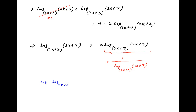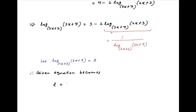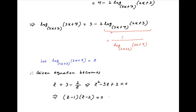Now if we let log of (3x plus 7) to the base (2x plus 3) be equal to z, then the equation becomes z equals 3 minus 2 upon z, which implies that z squared minus 3z plus 2 equals 0, which implies that (z minus 1)(z minus 2) equals 0, or in other words z equals 1 or z equals 2.